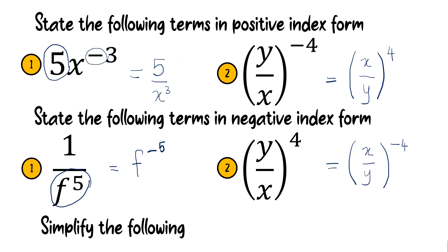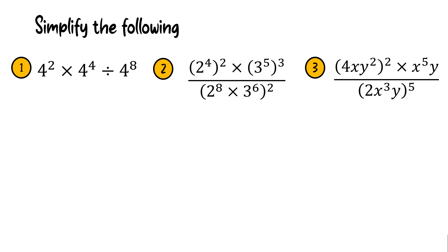We will go further to simplify. How to simplify? We combine all the methods — all the laws that you have learned before. For number 1, this is multiplication and this is division. The base must be the same. 4, 4, 4, 4 are the same base, so the final base should be 4.